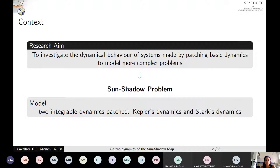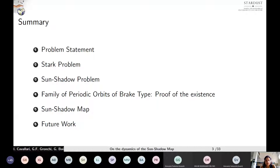In order to model this problem, which we have called the sun-shadow problem, we have patched two integrable dynamics: Kepler's dynamics and Stark's dynamics. During this presentation, I will describe this model and explain the idea behind it. I will discuss some meaningful characteristics of Stark's problem before talking about the sun-shadow problem, and in particular I will give a proof of the existence of a family of periodic orbits of brake type, which are orbits developing between two zero velocity points. I will also introduce the sun-shadow map, a tool used to analyze the dynamical behavior of the system.